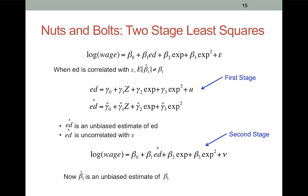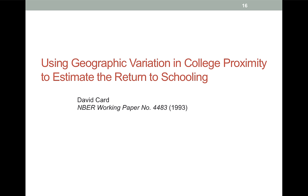Now let's take a look at an example of IV in action. In 1993, David Card wrote a paper called Using Geographic Variation in College Proximity to Estimate the Return to Schooling. He instrumented education using a dummy variable that was equal to 1 if someone grew up in an area that was near a college.